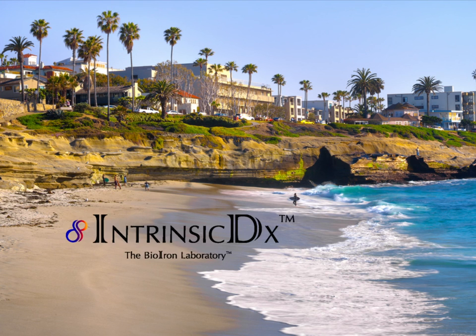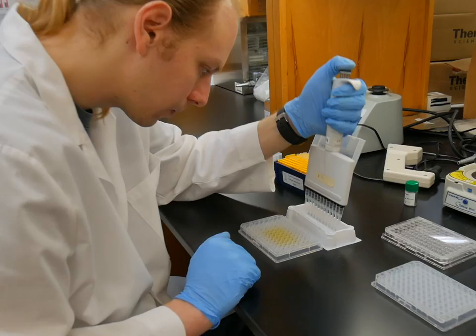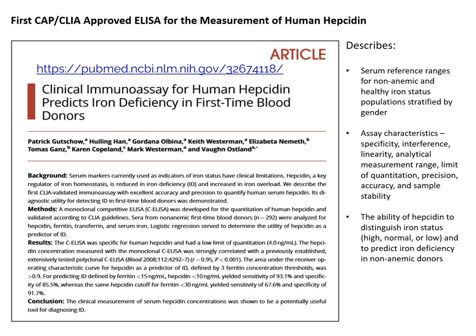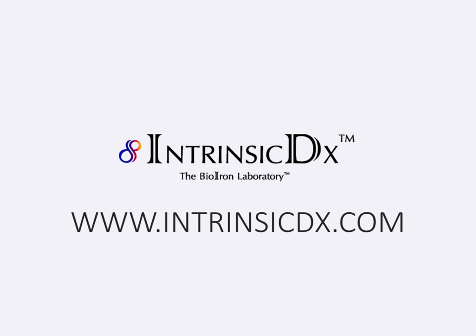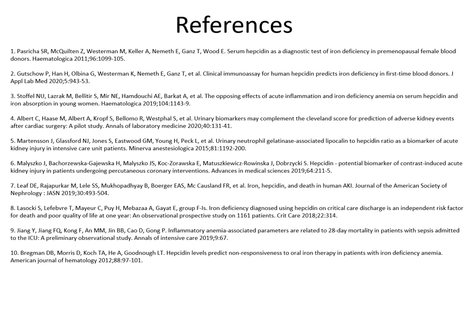Clinicians can have patient samples tested by IntrinsicDx, the only CAP-accredited, CLIA-certified laboratory to run a clinical immunoassay for human hepcidin. The assay characteristics and physiological validation were described in a peer-reviewed article. The authors demonstrated the ability of hepcidin to identify patients with iron deficiency even before the onset of anemia, highlighting yet another advantage of measuring hepcidin levels in preventative medical care. Visit www.intrinsicdx.com for more information.